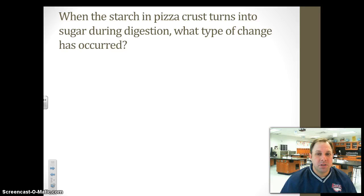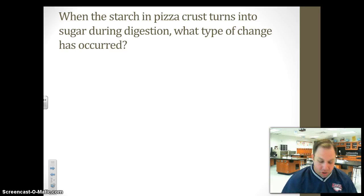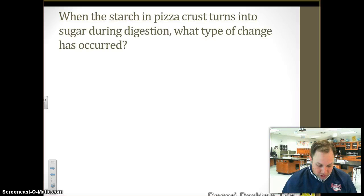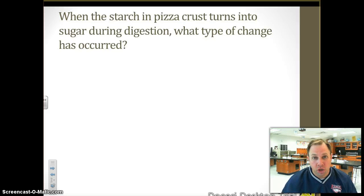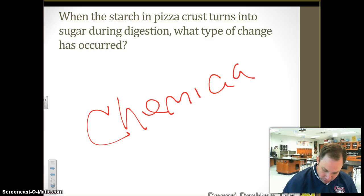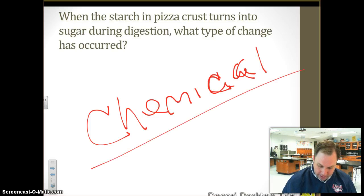When the starch in pizza crust turns into sugar during digestion, what type of change occurred? We've seen several questions like this. We have starch being turned into sugar — that is a chemical change. Something new is being formed.